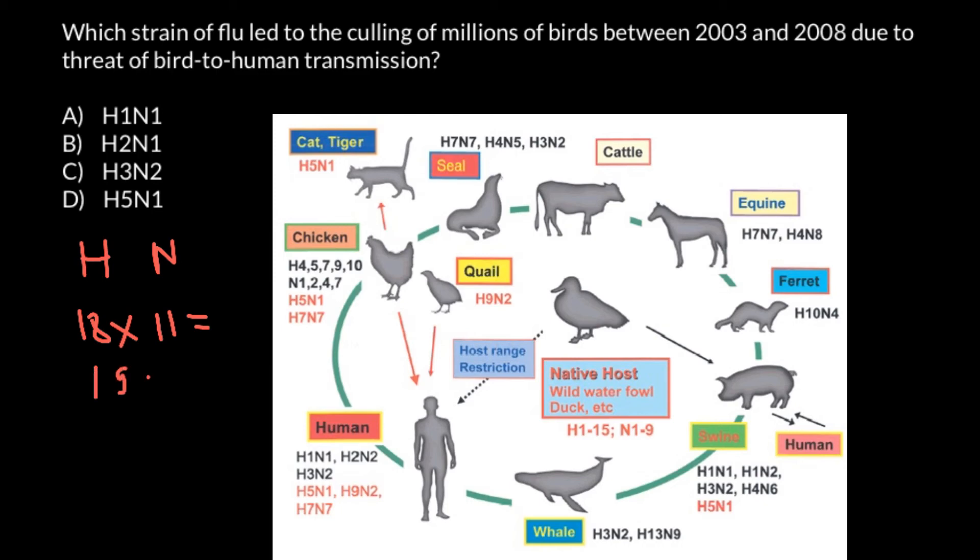198 different combinations of these two surface proteins. Not all combinations we can find in humans, but still, as you see, some of the combinations we can find both in humans and in pigs and in birds.